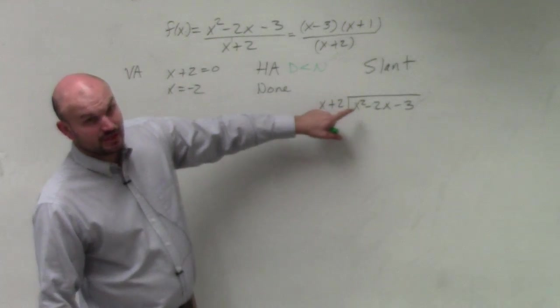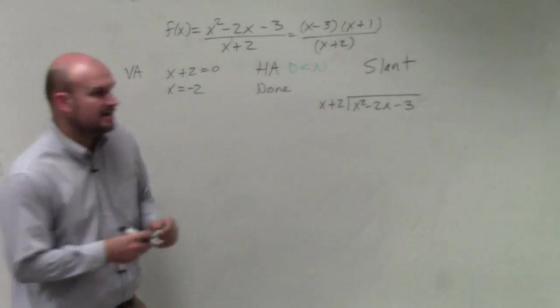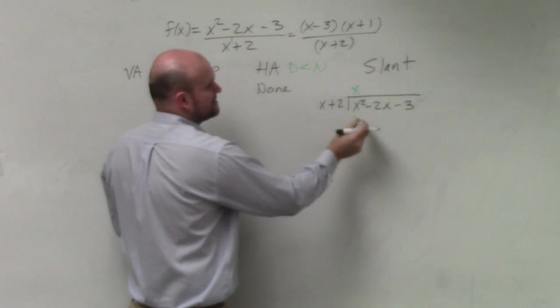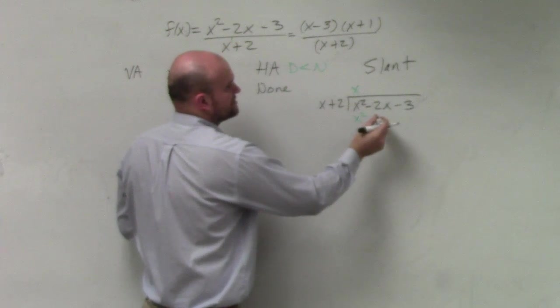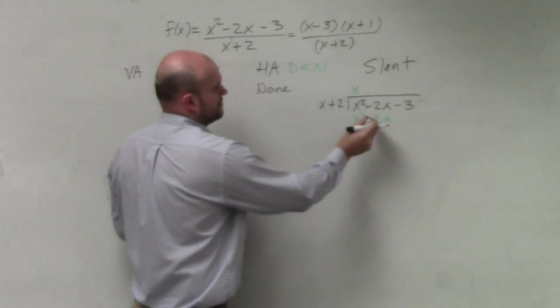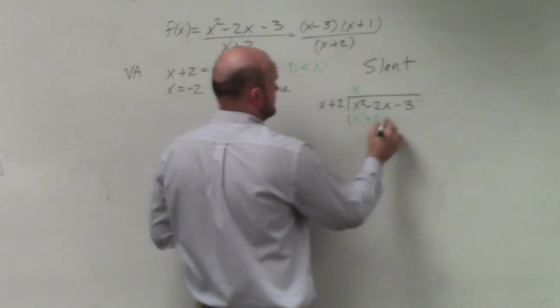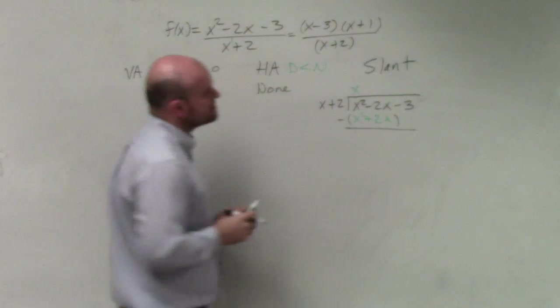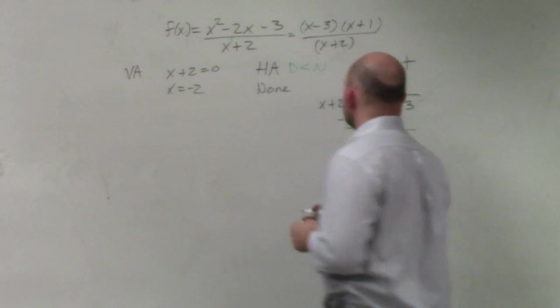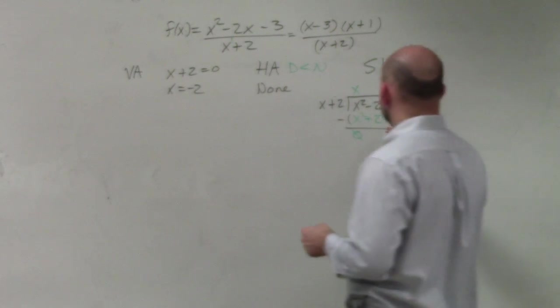So again, doing long division, x goes into x squared, x times. x times x is x squared, x times 2 is 2x. Subtract the rows. x squared minus x squared is 0.